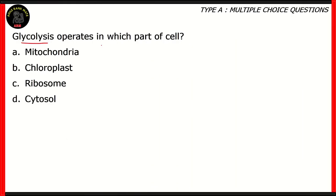Next question. Glycolysis operates in which part of the cell? Mitochondria, chloroplast, ribosome, cytosol. So what is glycolysis? Glycolysis is the first step in generation of energy in the cell.